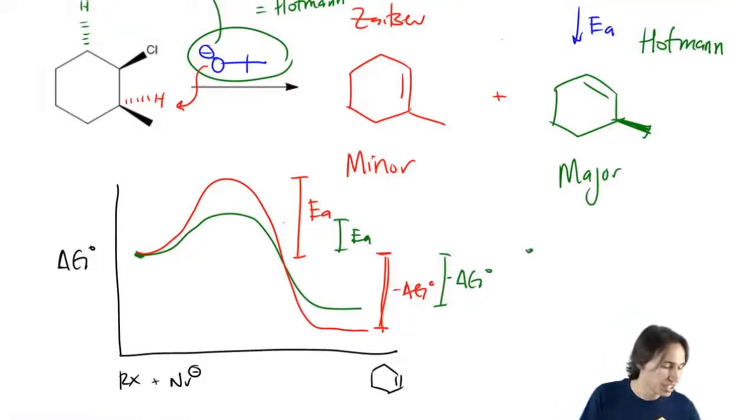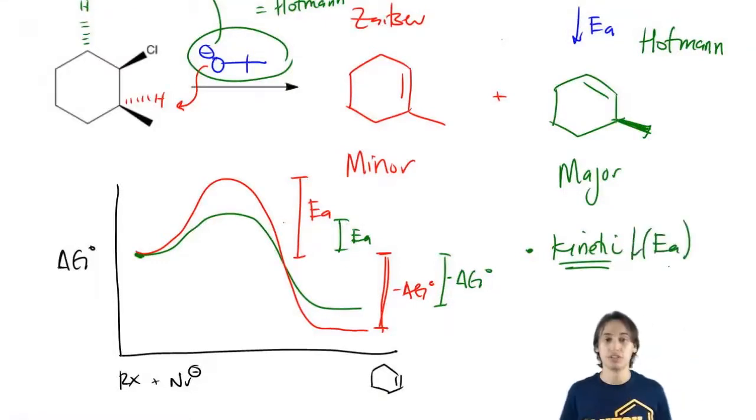So the green is what we would call kinetic control. Kinetic control basically means that all I'm looking at is the one with the lowest activation energy. I'm saying whichever one is the easiest to form, that's the one that's going to be favored.